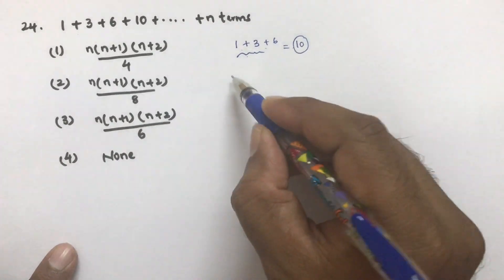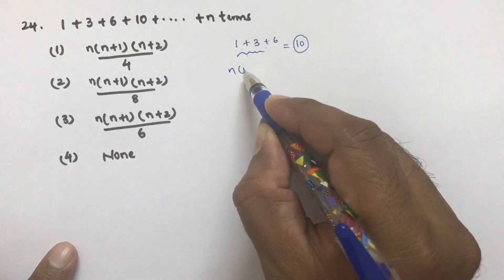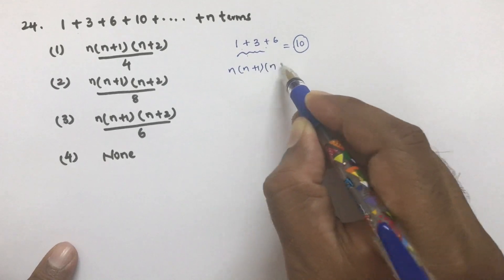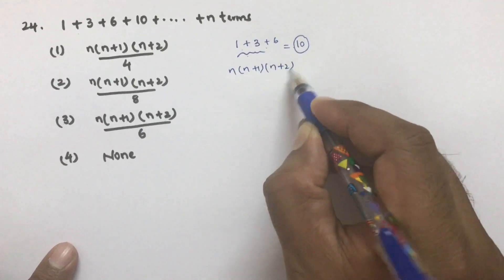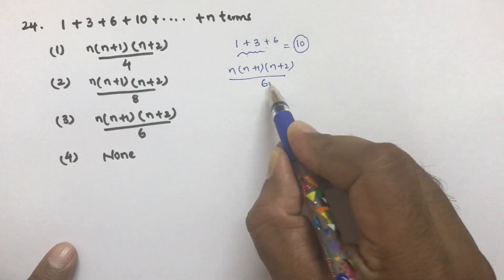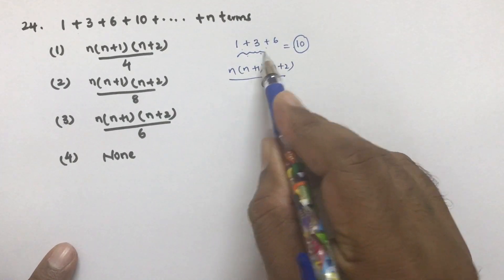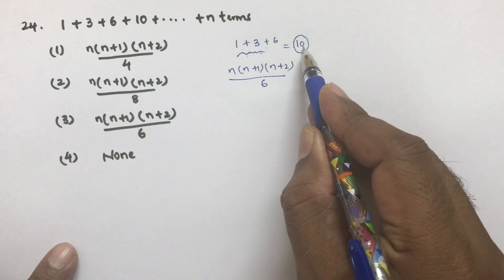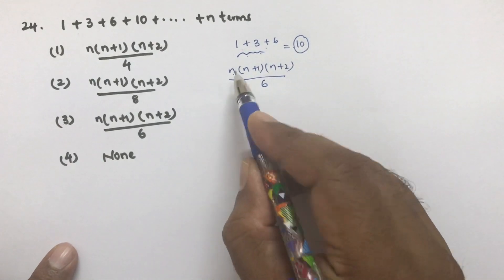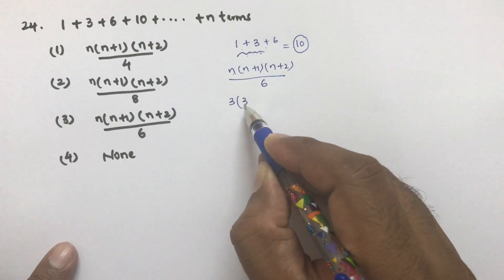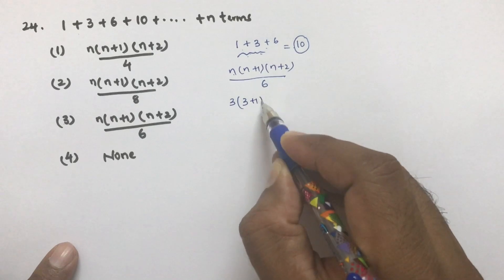The third option is n(n+1)(n+2)/6. When taking 3 terms, the sum is 10. Substitute n=3: 3×(3+1)×(3+2)/6 = 3×4×5/6 = 60/6 = 10. This matches.